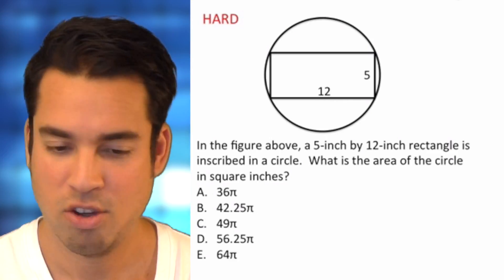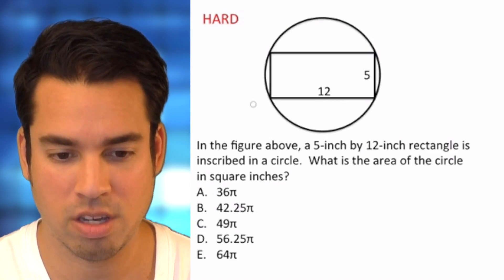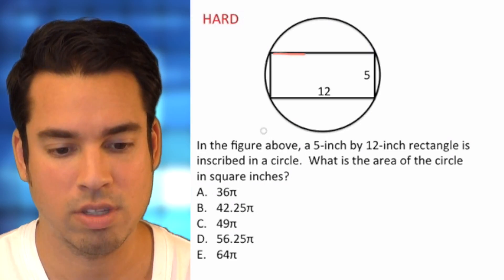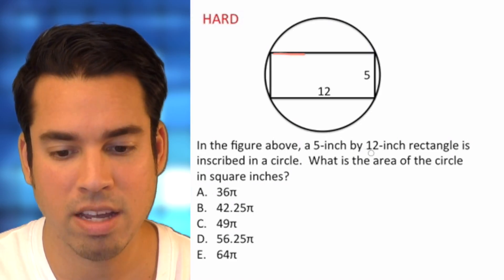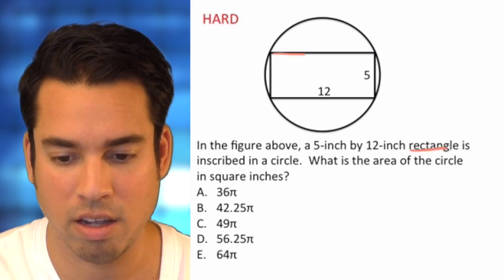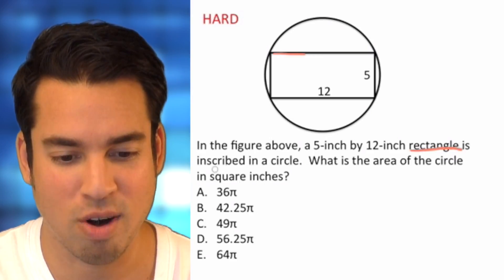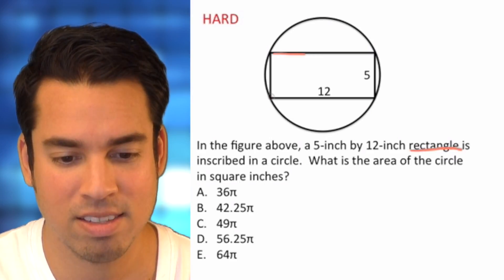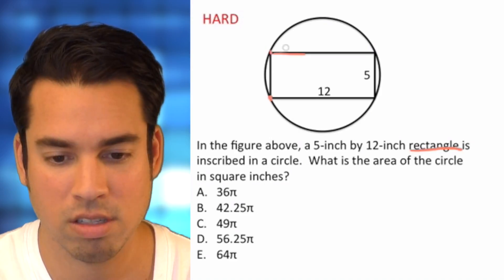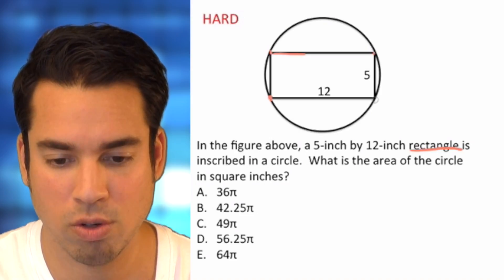What's up guys, welcome to circles practice problems level hard. Alright, let's do it. Okay, so we have this circle here and a rectangle within here. It says in the figure above, a 5-inch by 12-inch rectangle is inscribed in a circle.